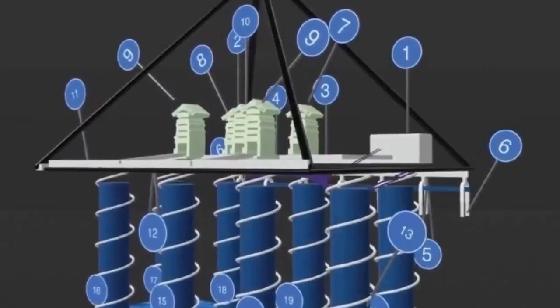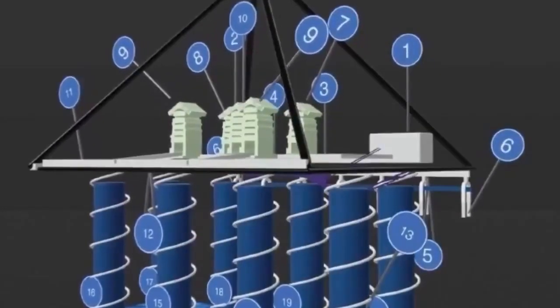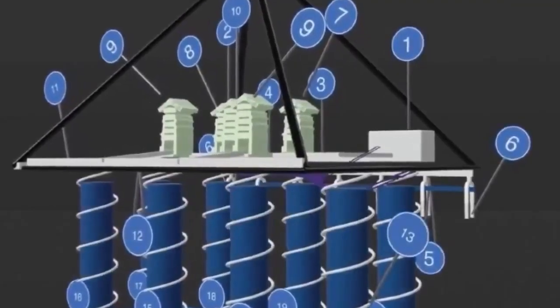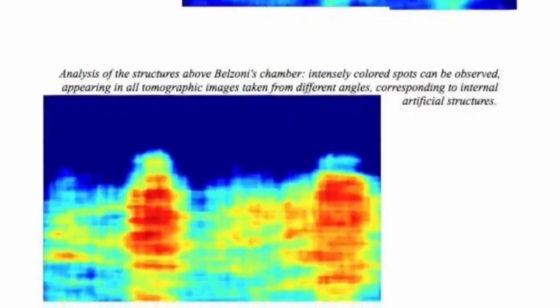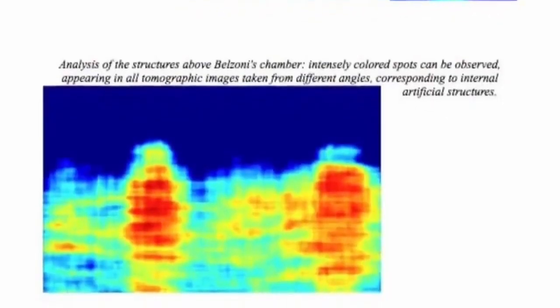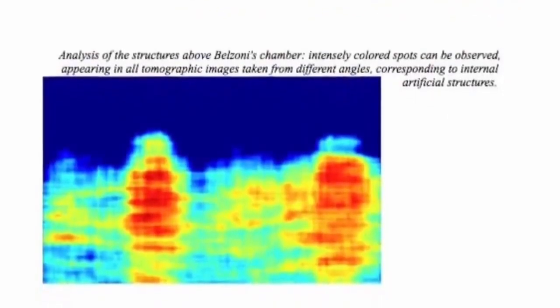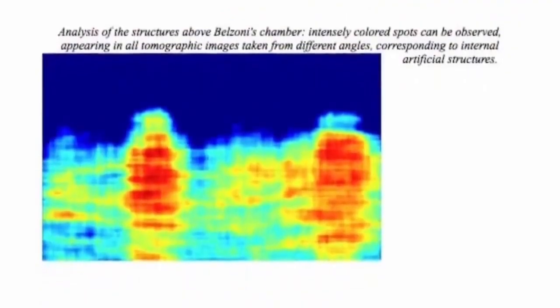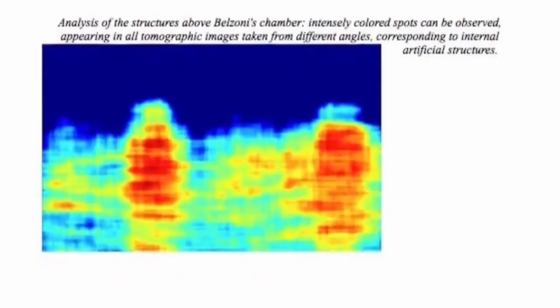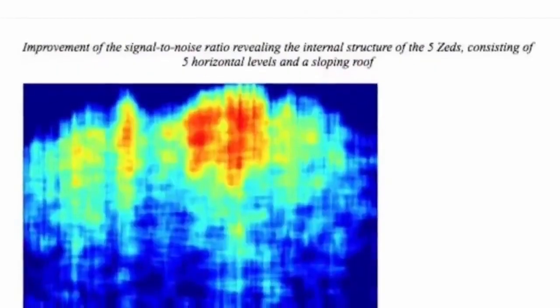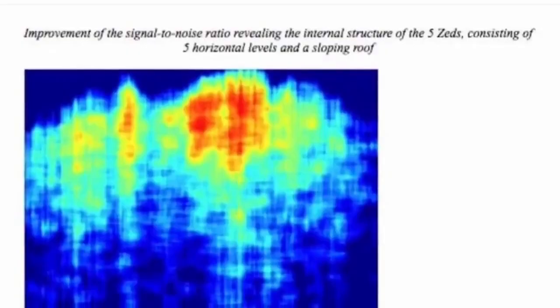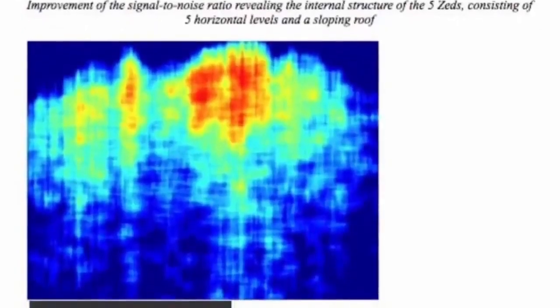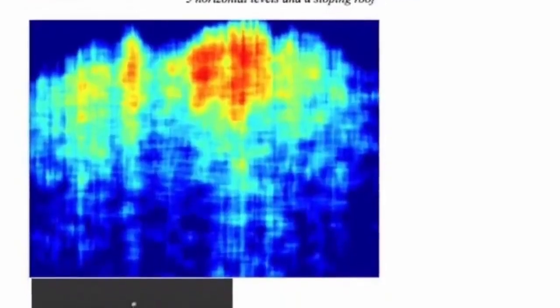Yeah, it's pretty amazing. Using cutting-edge technology, researchers have detected massive structures deep, deep underground. And get this, these structures are not just big, they're shaped like giant spirals hundreds of meters long. It's a finding that raises more questions than it answers, really making us rethink what we thought we knew about the Giza Plateau and the capabilities of the ancient Egyptians. So let's unpack this. Yes, we're talking about something absolutely massive, hidden over a mile beneath one of the most studied archaeological sites on Earth. How did they even find this?